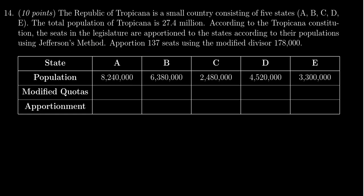We're going to use Jefferson's method, and for the sake of simplicity we've already correctly found a modified divisor that works. Our modified divisor is going to be 178,000. What we have to do is take the populations of each of these states and divide them by the modified divisor we found.